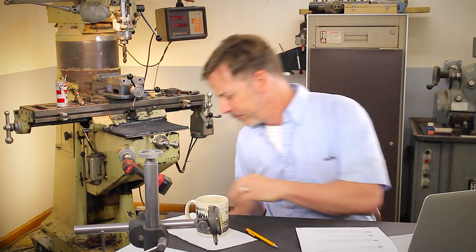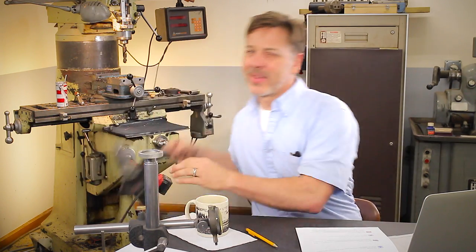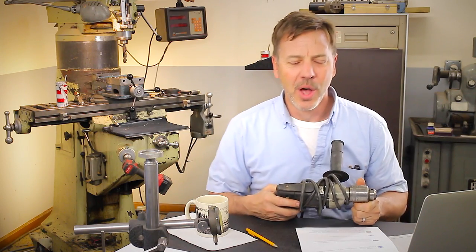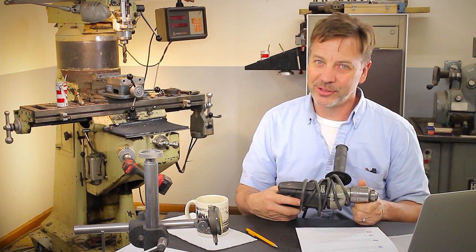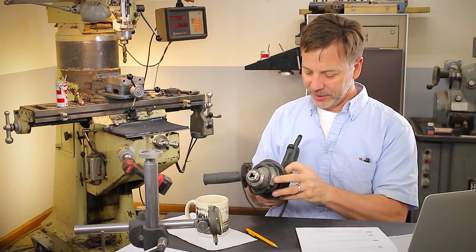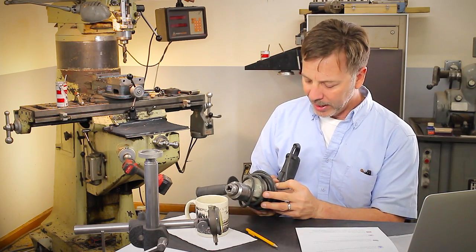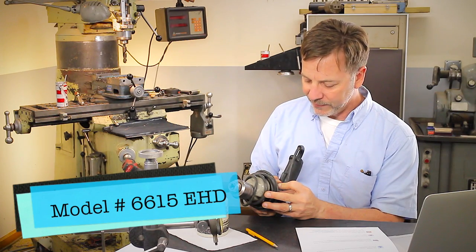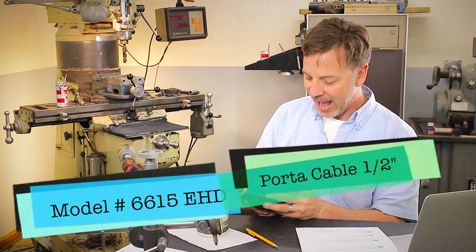But I wanted to let him know that there is another alternative. And you can go with one with a cord. Now, most cordless drills are not strong enough to do it. But this one is. So I want to give you guys the number for this. This is a model number 6615 EHD half inch drill. Variable speed, reversible.